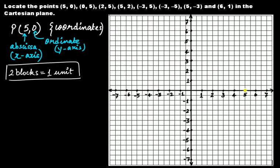If five comes here, and the ordinate is zero, that means you have to count zero units on the y-axis — you don't have to count anything. So (5, 0) is actually talking about this point at five on the x-axis, because on the x-axis the ordinate is zero. Similarly, on the y-axis the abscissa is zero. Since the ordinate is zero, point P is actually on the x-axis itself.